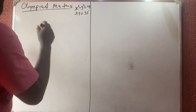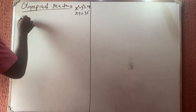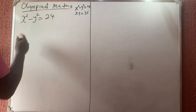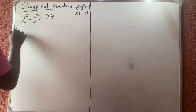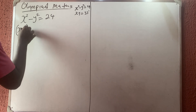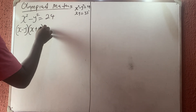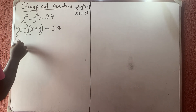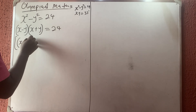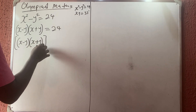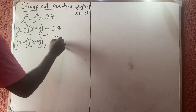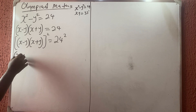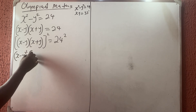Starting from x squared minus y squared equals 24, remember this is a difference of two squares, so it factors as (x minus y)(x plus y) equals 24. Now let me square both sides, giving (x minus y)(x plus y) all squared equals 24 squared.